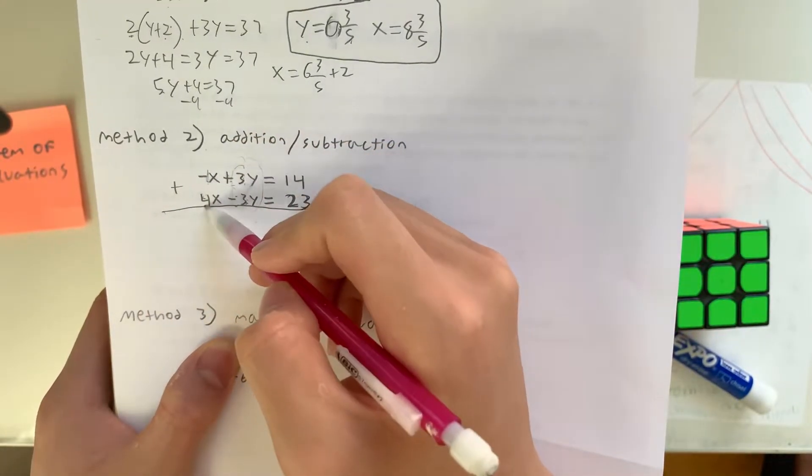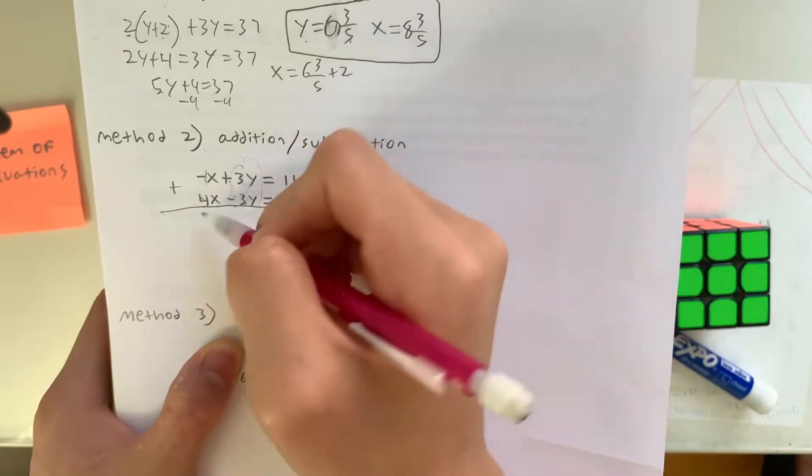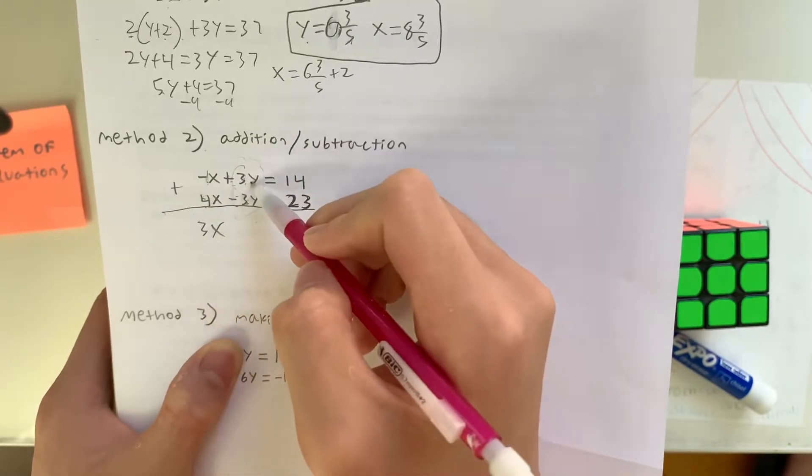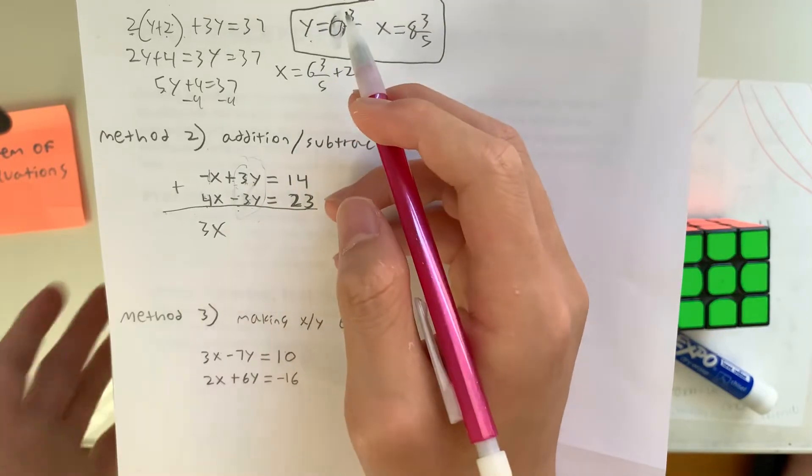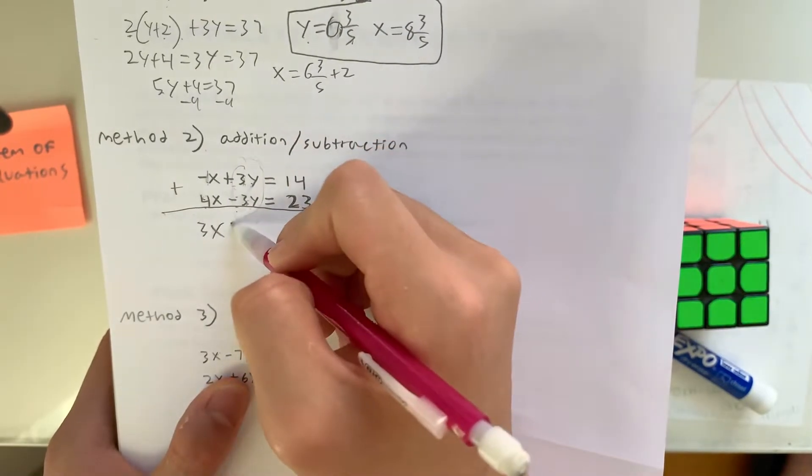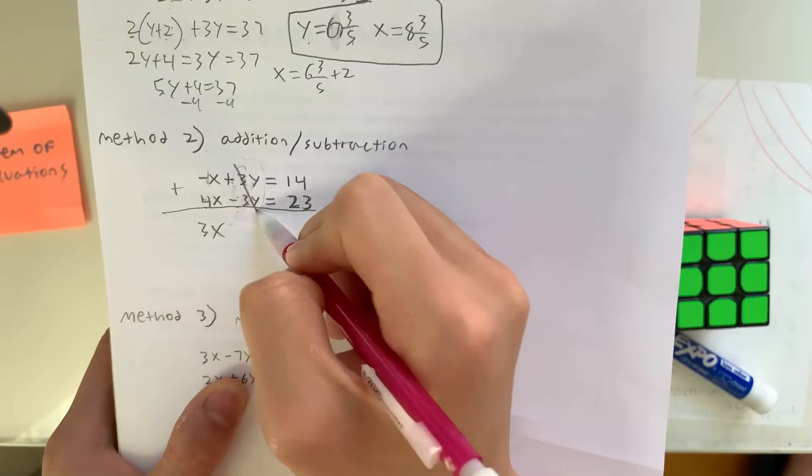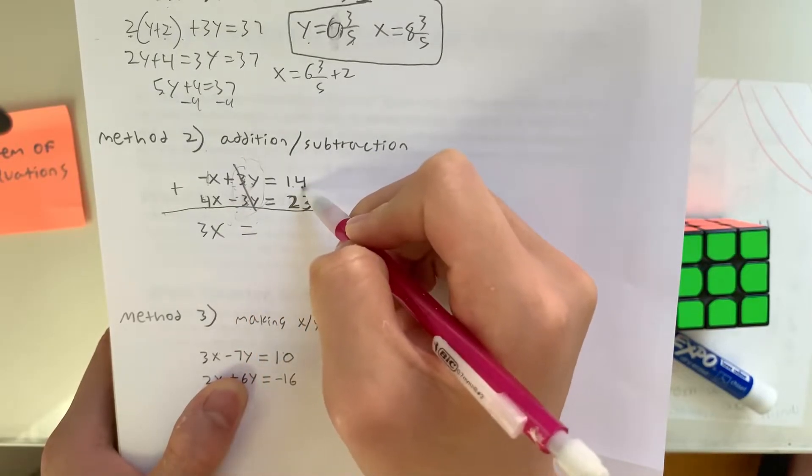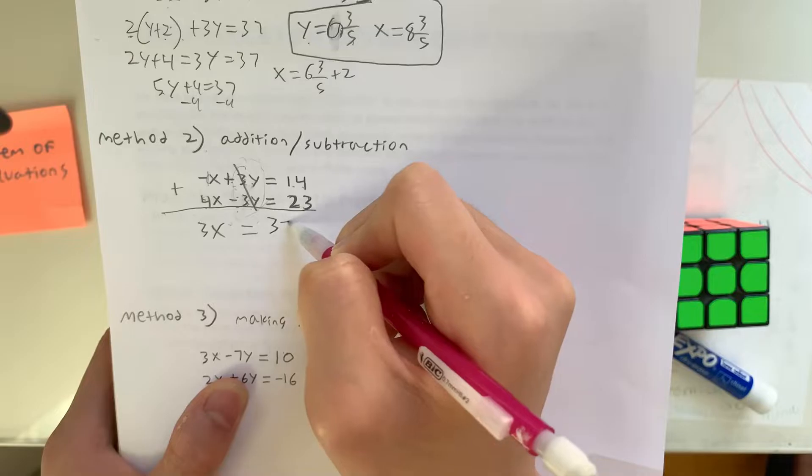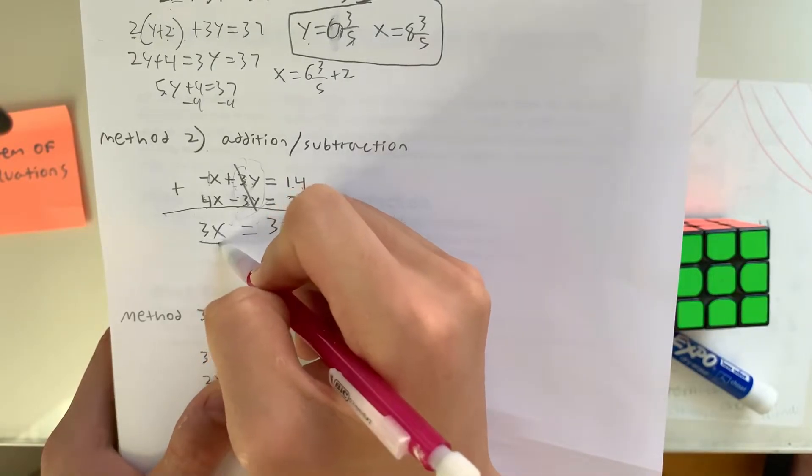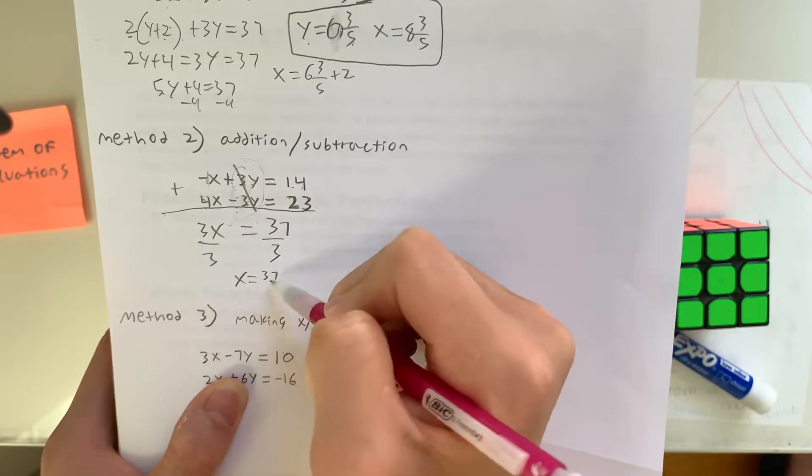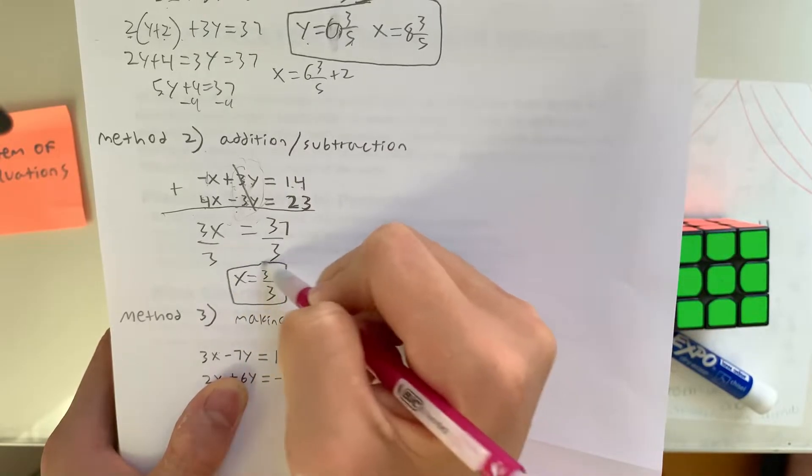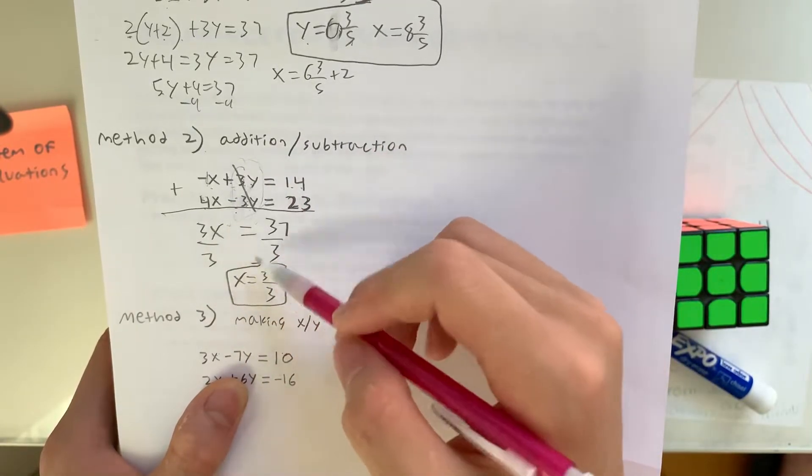What's negative 1 plus 4? That's equal to 3, so that's 3x. And over here, what's 3 plus negative 3? That's essentially 3 minus 3, so that's 0. So these two cancel out. Equals 14 plus 23, that's 37. So we could divide both sides by 3, giving us x equals 37 over 3.